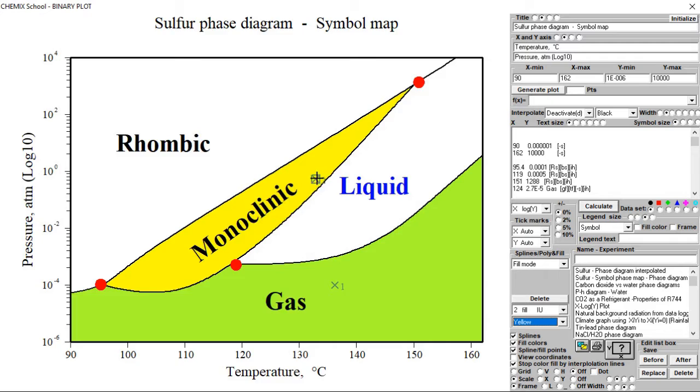As demonstrated here, it is possible to move the fill point by the mouse cursor. Select a new fill point and a color for the monoclinic phase region. Insert the fill point.